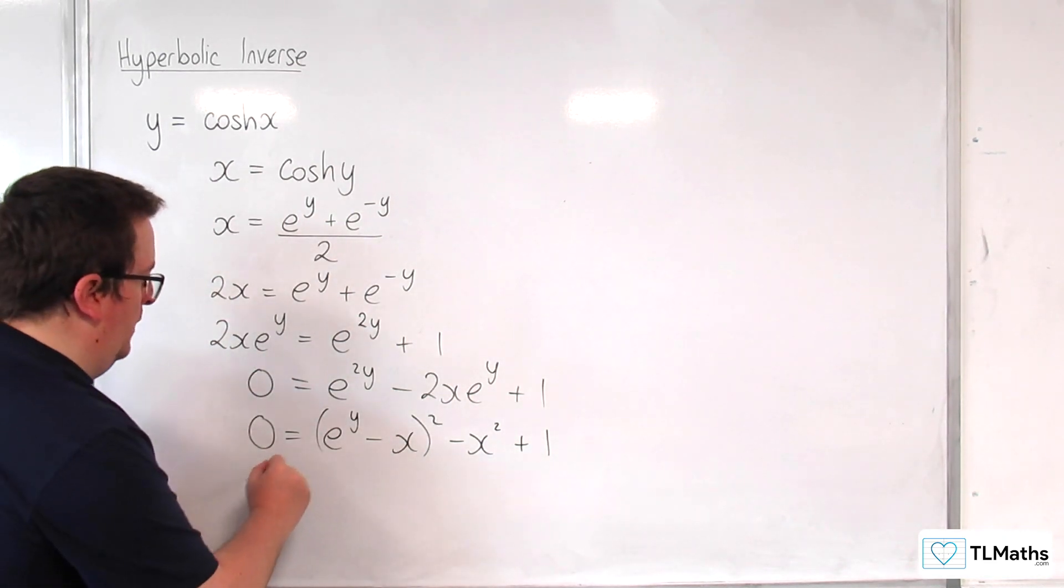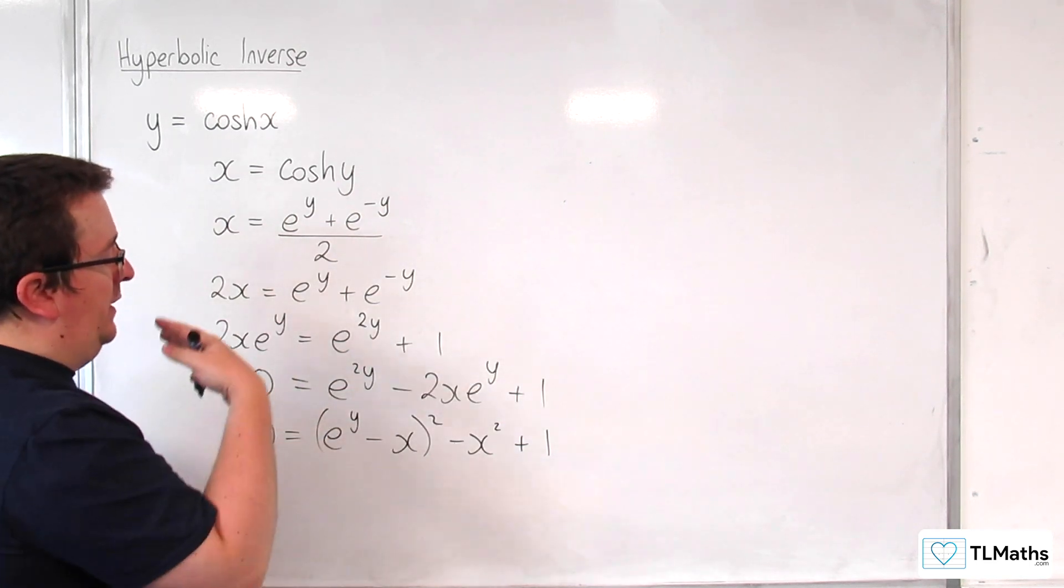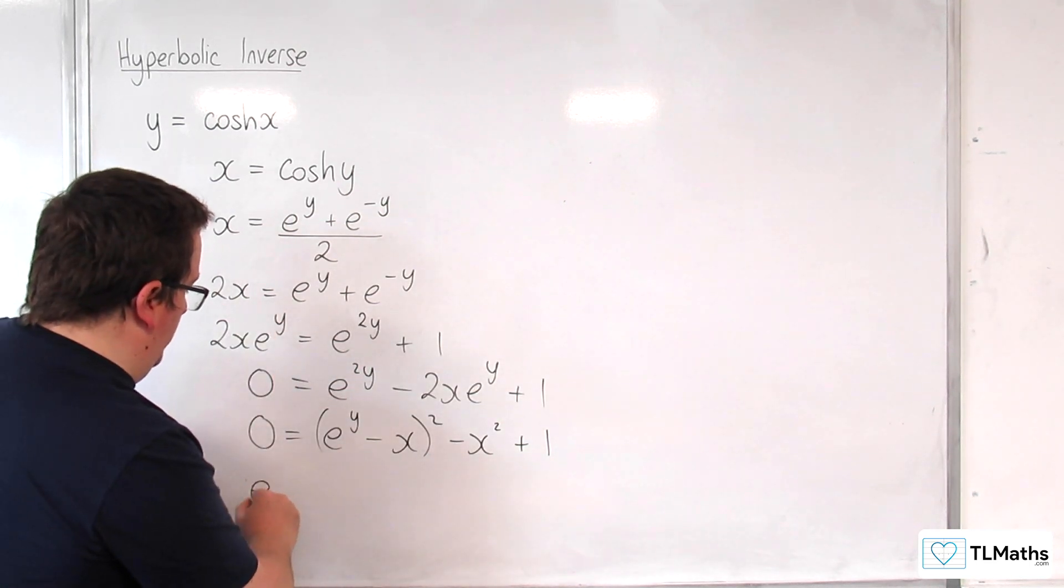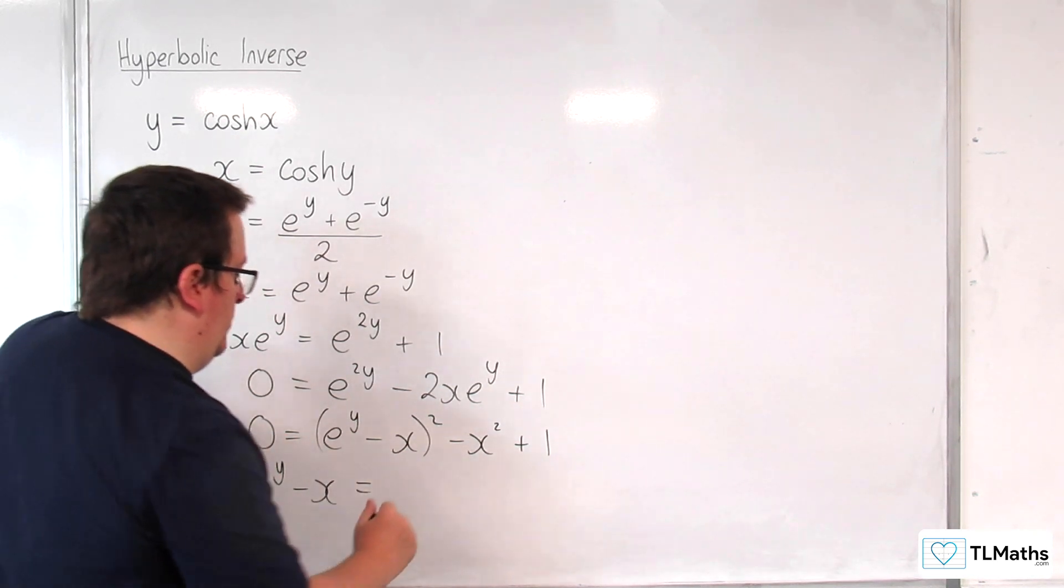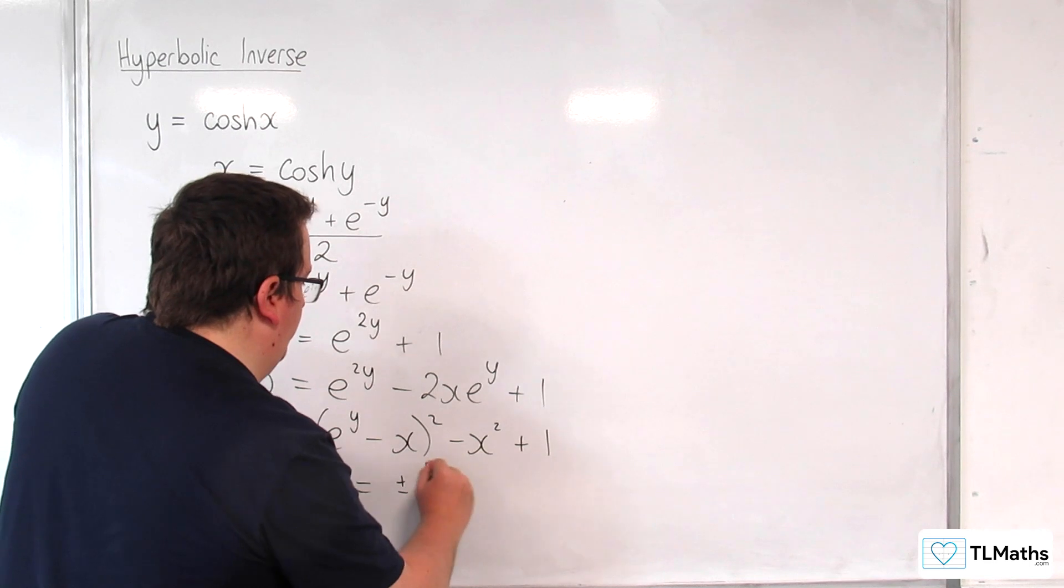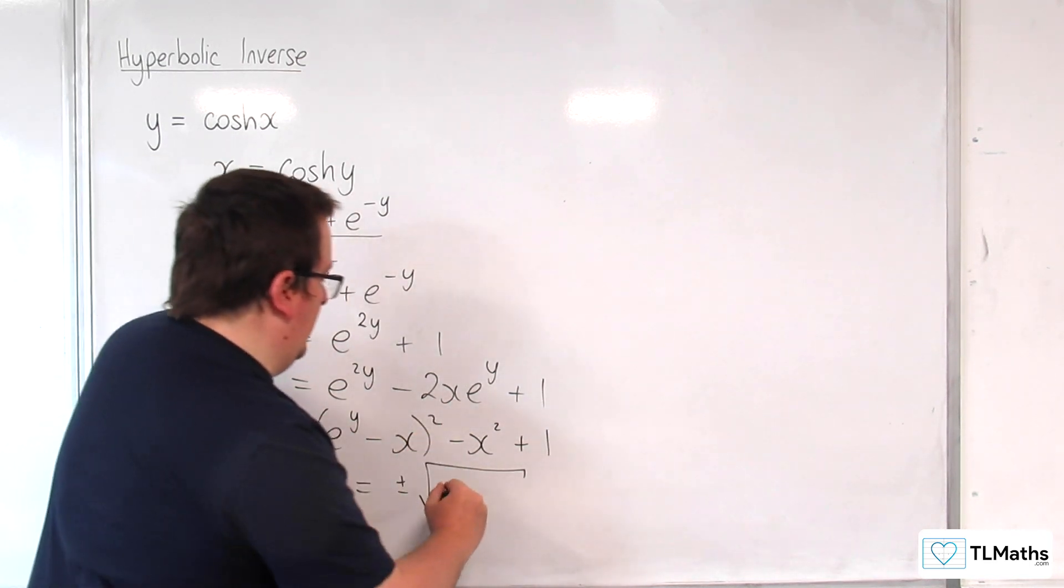So let's rearrange this. So I can add x squared to both sides, subtract 1 from both sides, and then square root both sides. So e to the y, take away x, is going to be equal to plus or minus the square root of x squared take away 1.